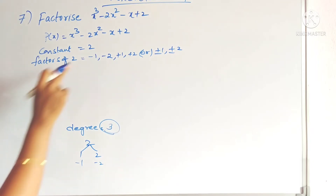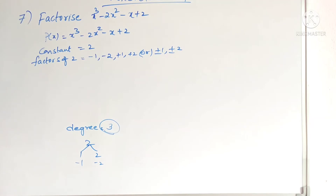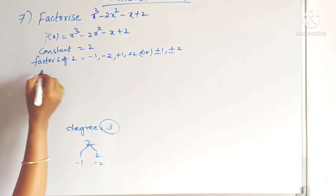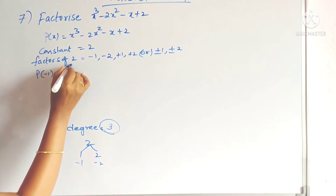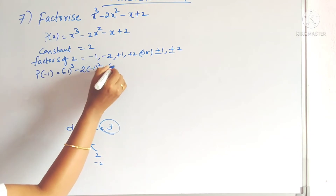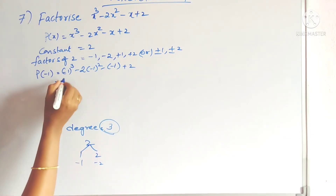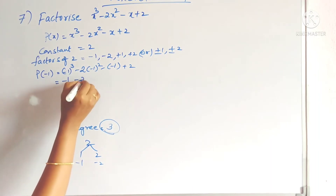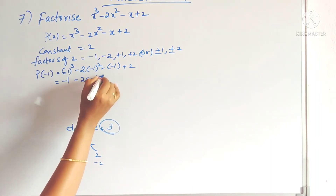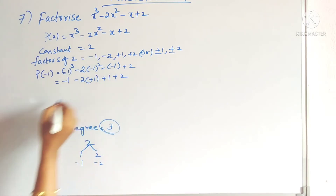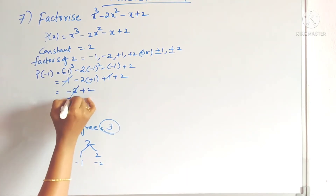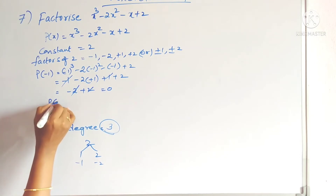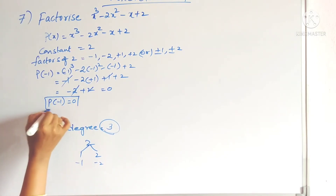Now we will check whether minus 1 is a factor of p(x) or not. If it is a factor, we will get remainder 0 when we substitute. So p of minus 1: write minus 1 in the place of x. Minus 1 to an odd power is minus 1. Minus 1 whole power odd is minus 1, minus into minus is plus 1, plus 2. Now minus 1 and plus 1 cancel. Minus 2 plus 2 also cancels. So p of minus 1 equals 0.